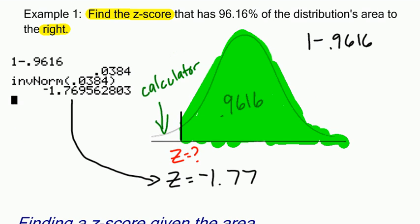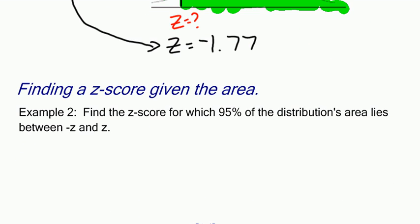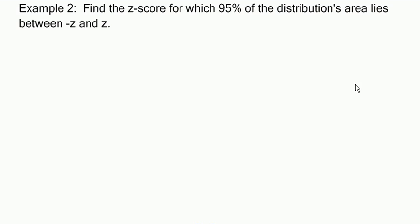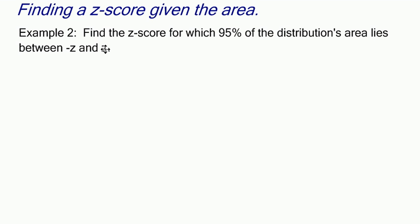I did one of these before in a previous video. Here's another example. Let's take a look at what we've got here. Find the z-score for which 95% of the distribution area lies between negative z and positive z.